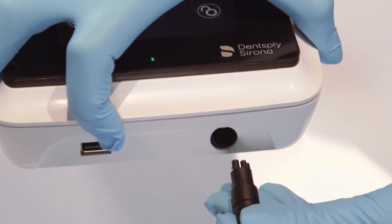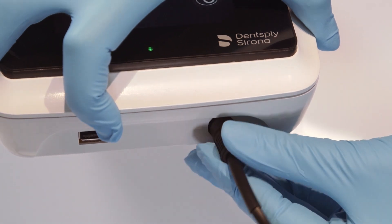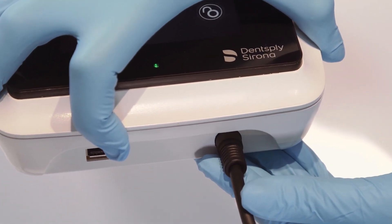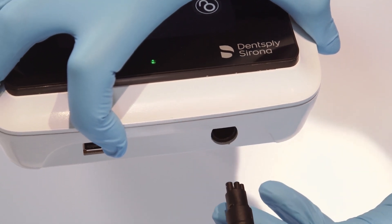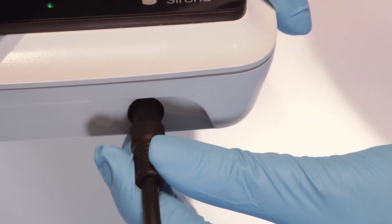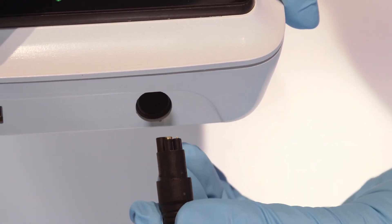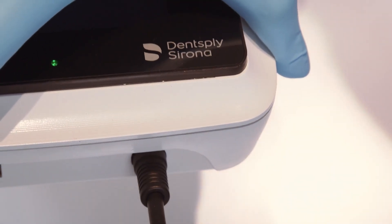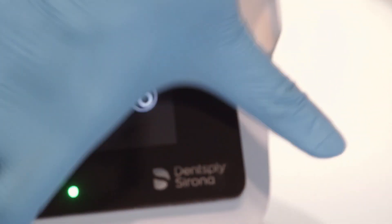To connect the featherweight handpiece cable to the Cavitron 300 series ultrasonic scaling system, insert the black handpiece cable connector into the port on the front of the system. If the cable connector does not seat into the system's port, gently rotate the cable connector until contacts align and then fully insert the connector.